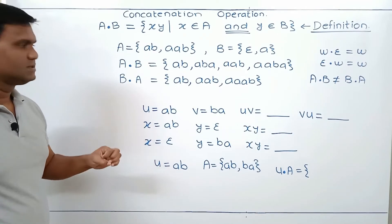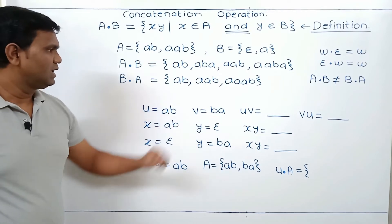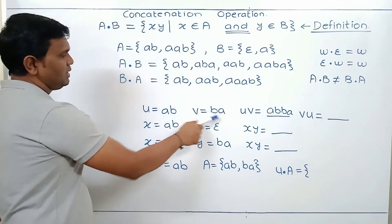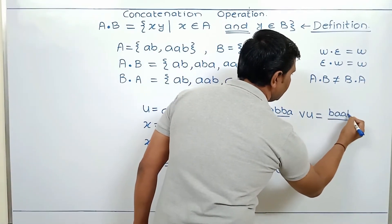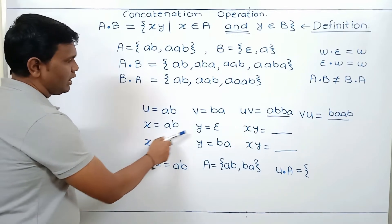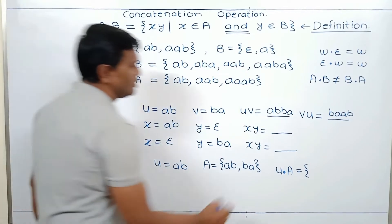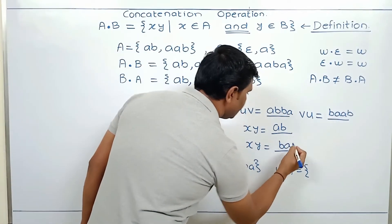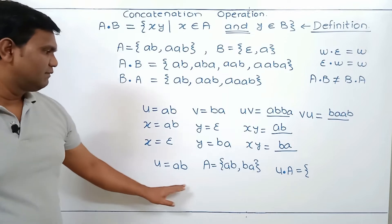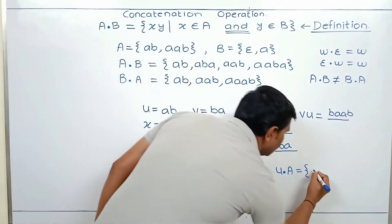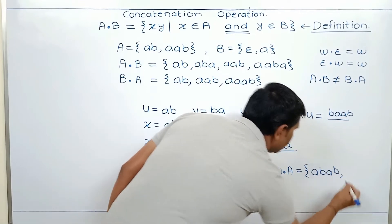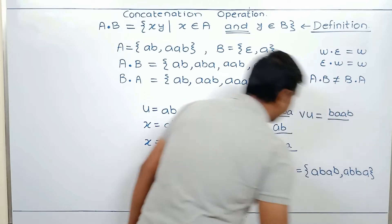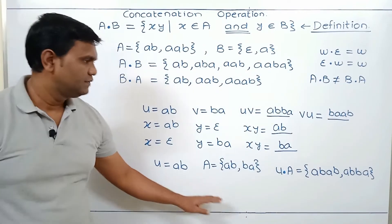Now let's concatenate only strings. U = AAB, V = BA, so UV = AABBA and VU = BAAAB. For concatenating a string with a language: X = AB, Y = ε gives AB·ε = AB. Then ε·BA = BA. AB·AB gives ABAB and AB·BA gives ABBA. This is an example of concatenating a string with a language.